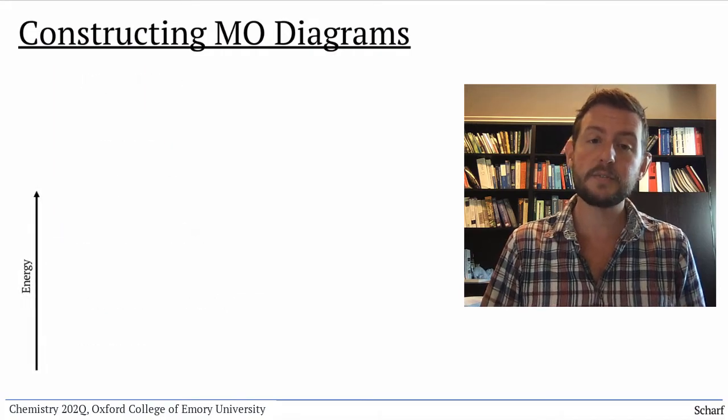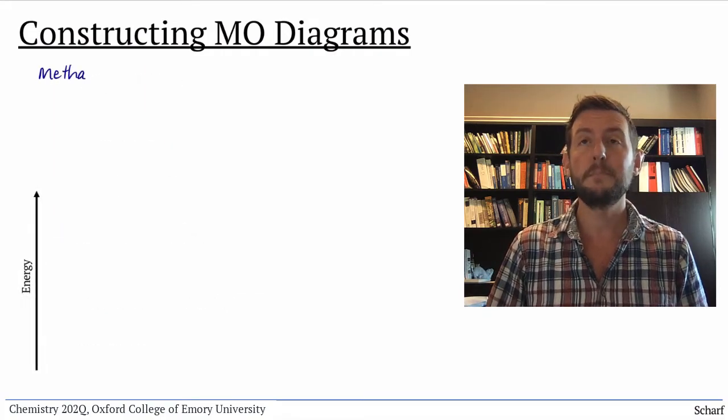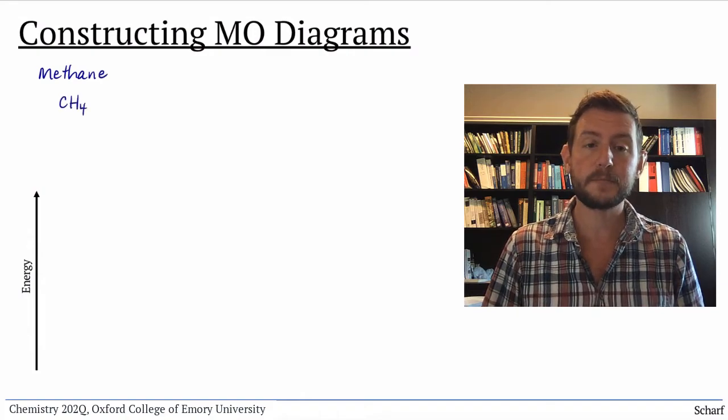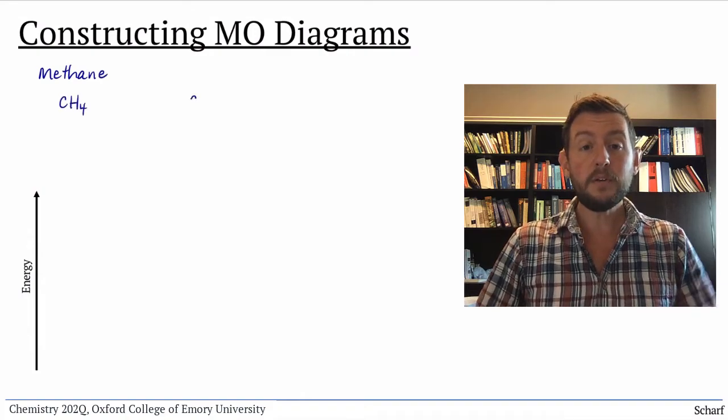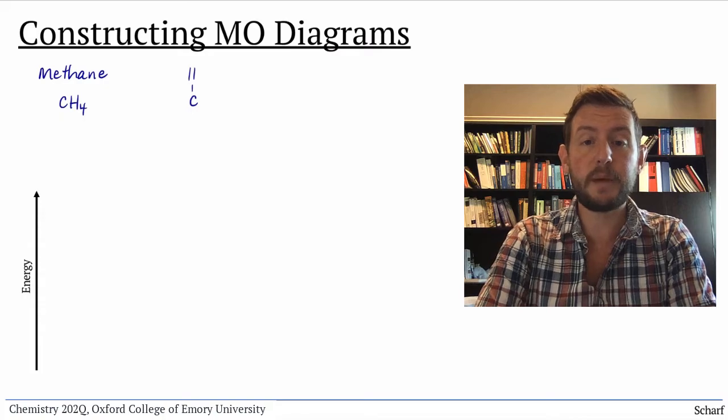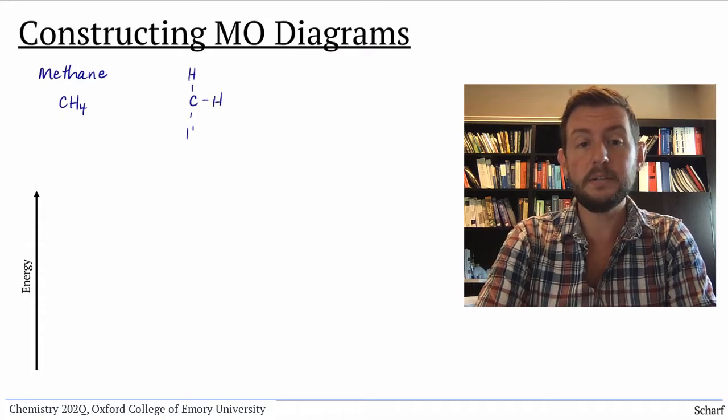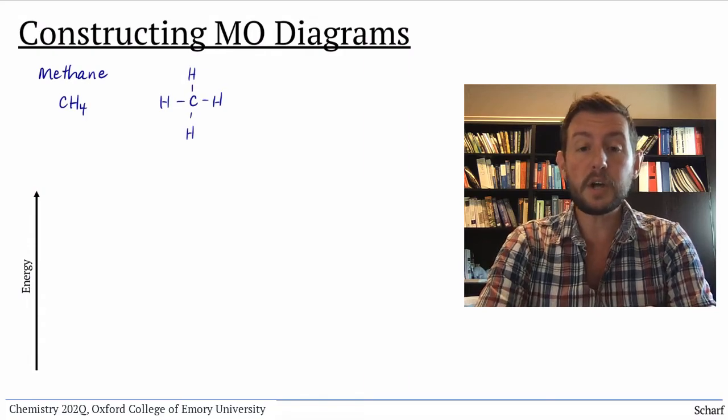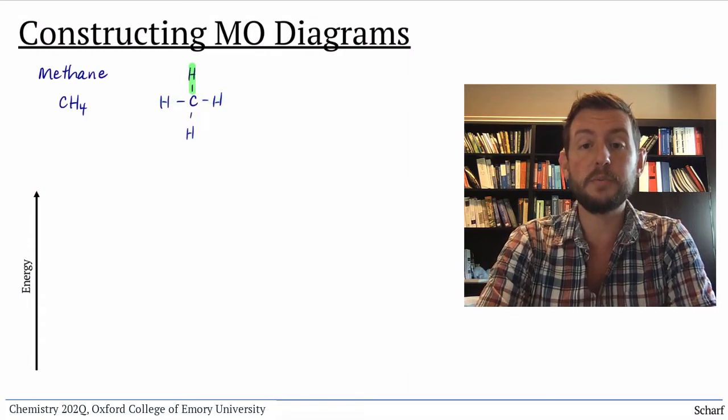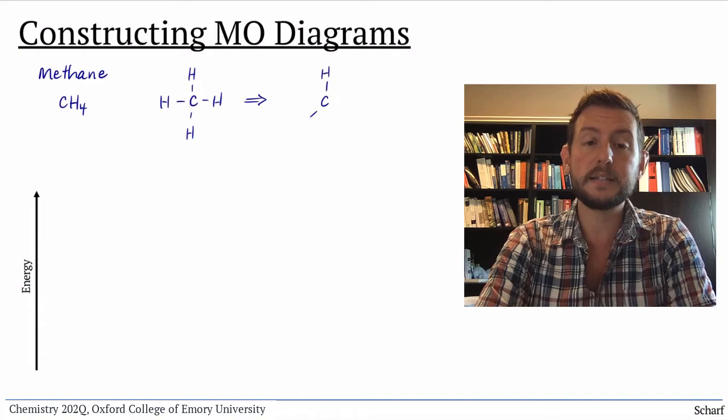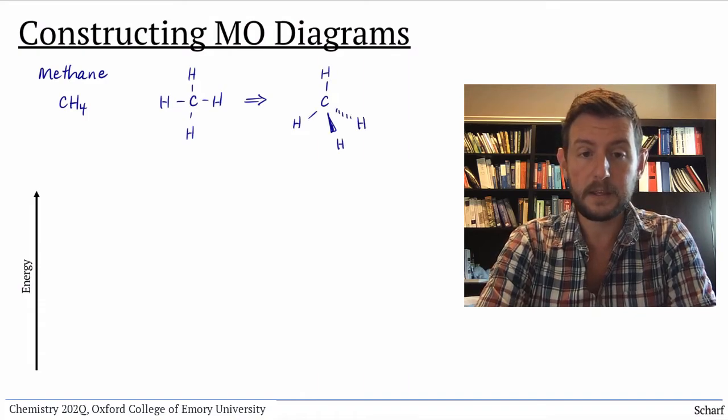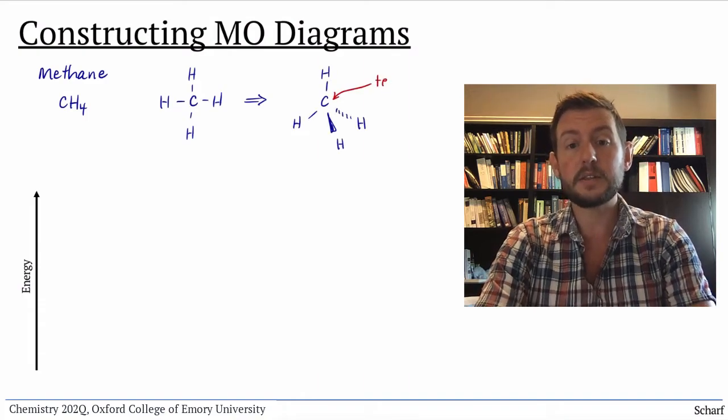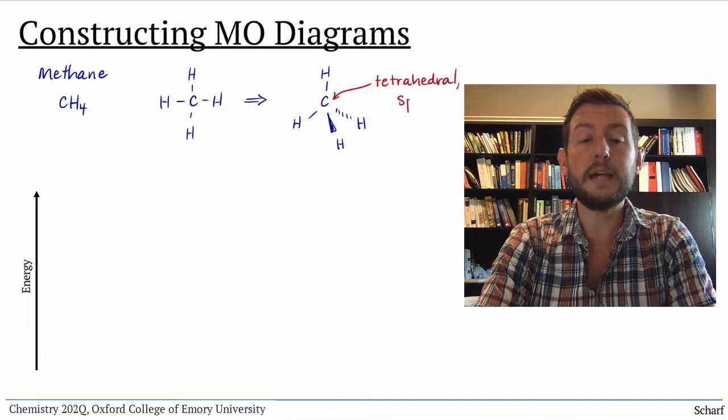Let's see how this works for a simple organic molecule, methane, CH4. From Chem 150, you know that the Lewis structure of methane has a central carbon with four hydrogen atoms bonded to it. We know that the carbon has four electron groups surrounding it, so it has a tetrahedral geometry. The geometry tells us that the carbon atom is sp3 hybridized.